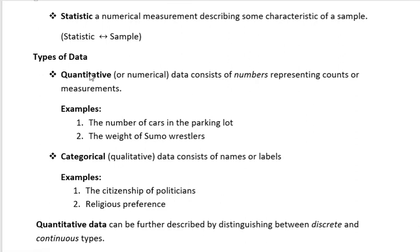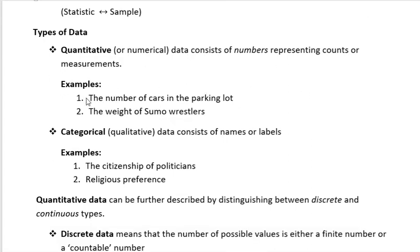There are different types of data. One type is quantitative or numerical data, which consists of numbers representing counts or measurements. Examples include the number of cars in the parking lot or the weight of sumo wrestlers.